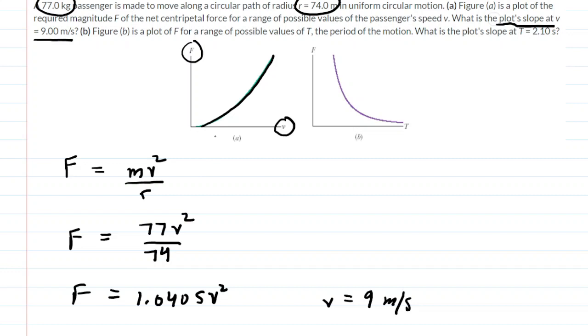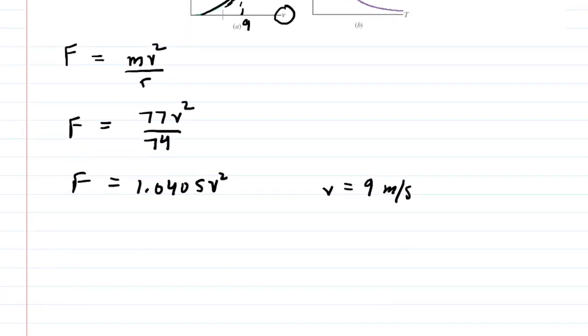If we look back at the graph, we can imagine that at some point, perhaps around here, the speed is equal to 9 meters per second. We need to find the slope of the curve. The slope of the curve is the same thing as the derivative. So we need to take the derivative of our force function. We're going to take the derivative of force with respect to our variable, which in this case is the speed.